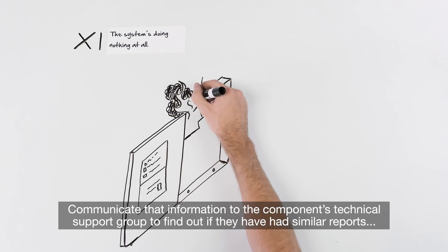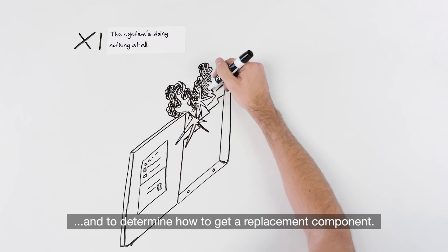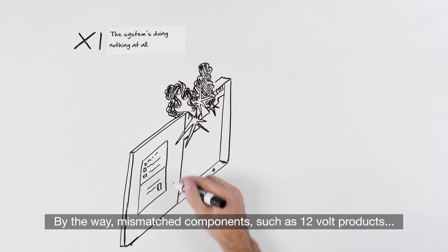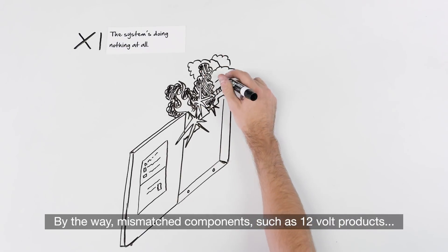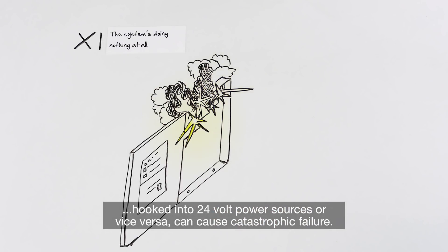Communicate that information to the component's technical support group to find out if they have had similar reports and to determine how to get a replacement component. By the way, mismatched components such as 12-volt products hooked into 24-volt power sources, or vice versa, can cause catastrophic failure.